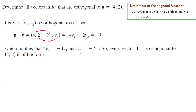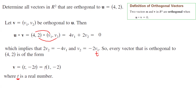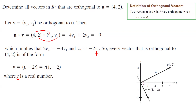You've found a relation between the components of vector v. If you let v1 equal t, then v2 becomes negative 2t. So vector v can be written using parameter t as (t, negative 2t). Since t is a scalar, you can factor it out and write t times (1, negative 2). Visualizing vector u as (4, 2), any vector that is a multiple of (1, negative 2) is orthogonal to it.